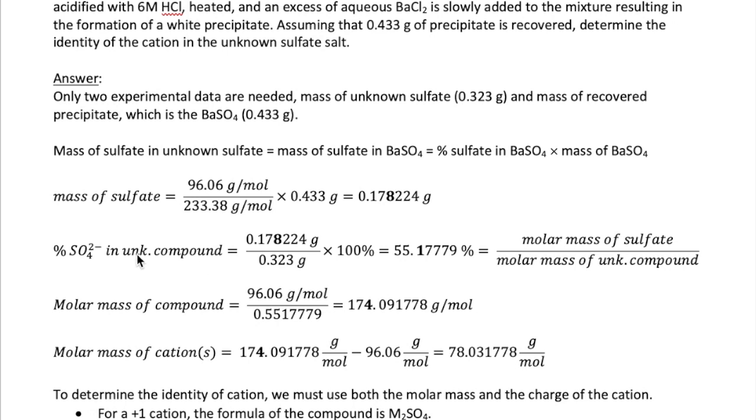Once we have this number, we can now calculate the percent composition of sulfate in our unknown compound by using the experimental definition of percent composition, which means we're going to need to divide the mass of sulfate by the mass of the unknown compound. When we do this, we get 55.17779 percent. This number is useful because this is the same exact percentage that we get if we use the theoretical definition of percent composition, which is the molar mass of sulfate divided by the molar mass of the unknown compound. As you can see, if we know the percentage and we know the molar mass of sulfate, we can solve for the molar mass of the compound. If we rearrange that equation, we get the molar mass of the compound being 174.091778 grams per mole.